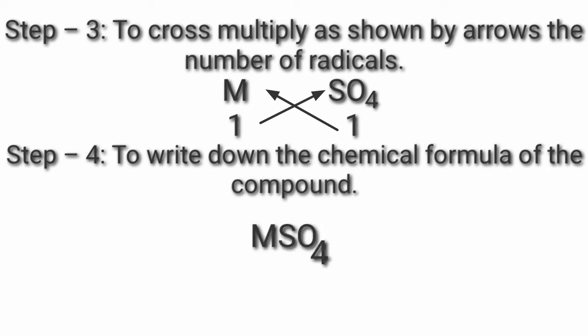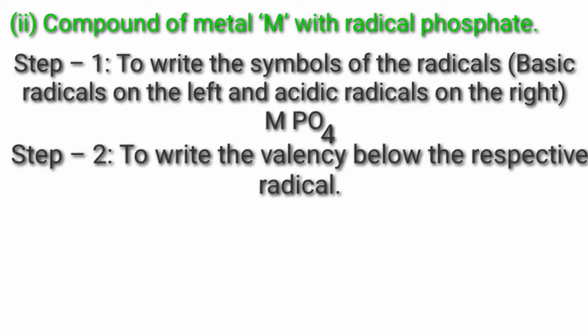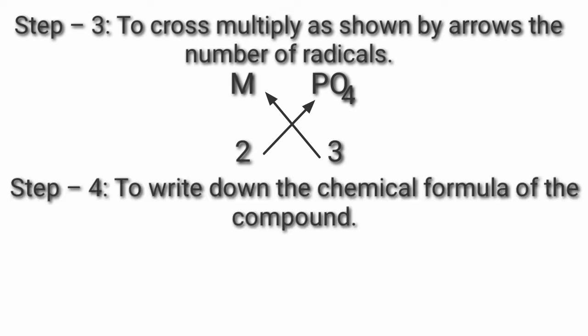Second, compound of metal M with radical phosphate. Step 1: Write symbols of radicals — M PO4. Step 2: Valency of M is 2, valency of PO4 is 3. Step 3: Cross multiply — M multiplied by 3, PO4 multiplied by 2. Step 4: Chemical formula is M3(PO4)2.